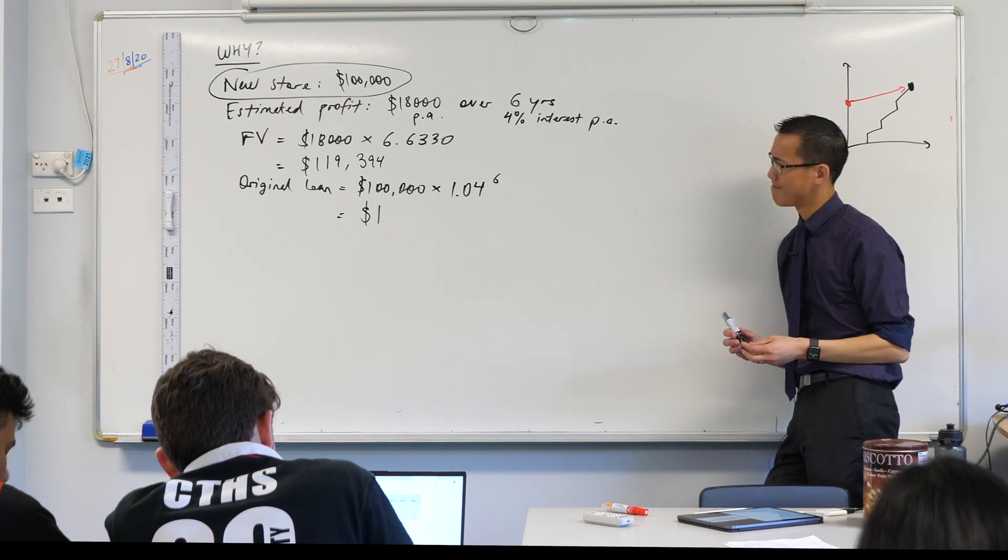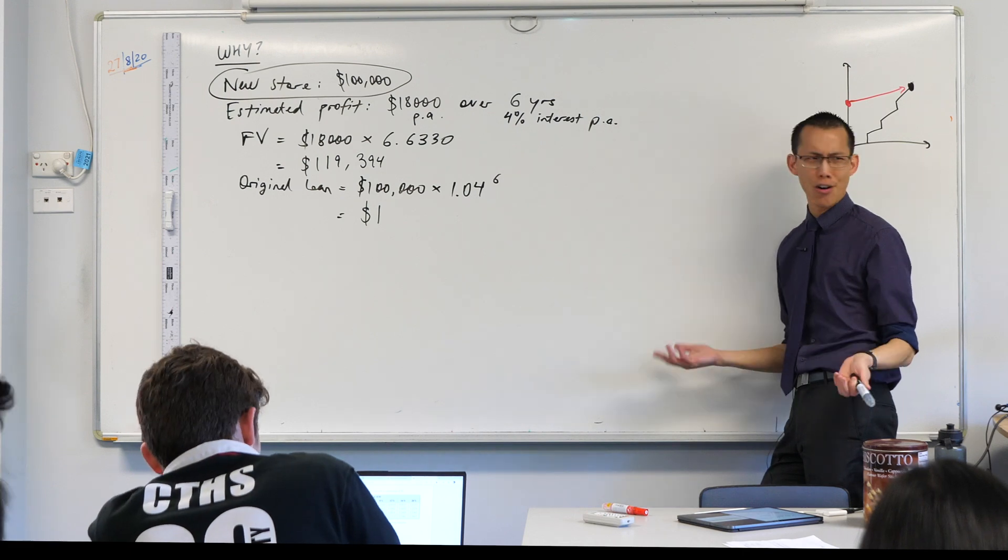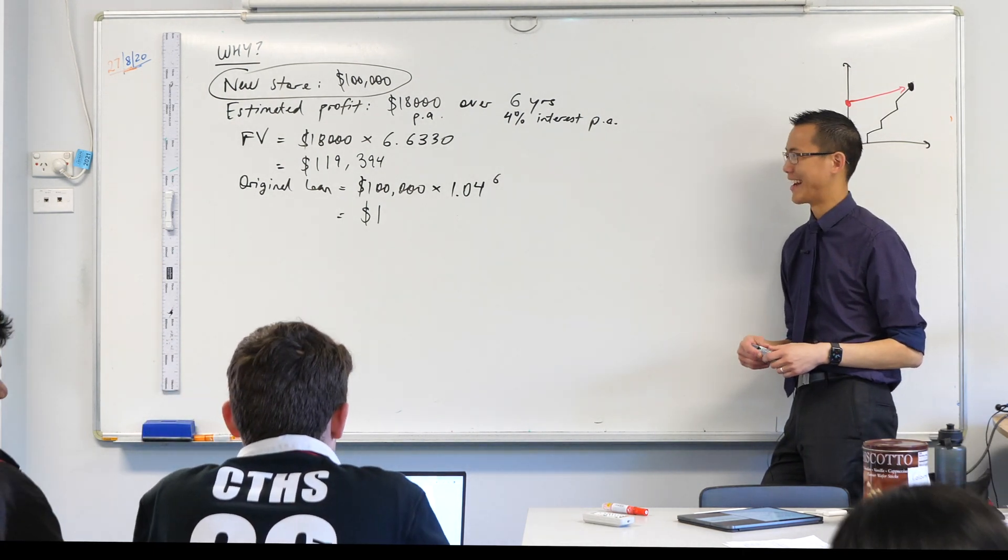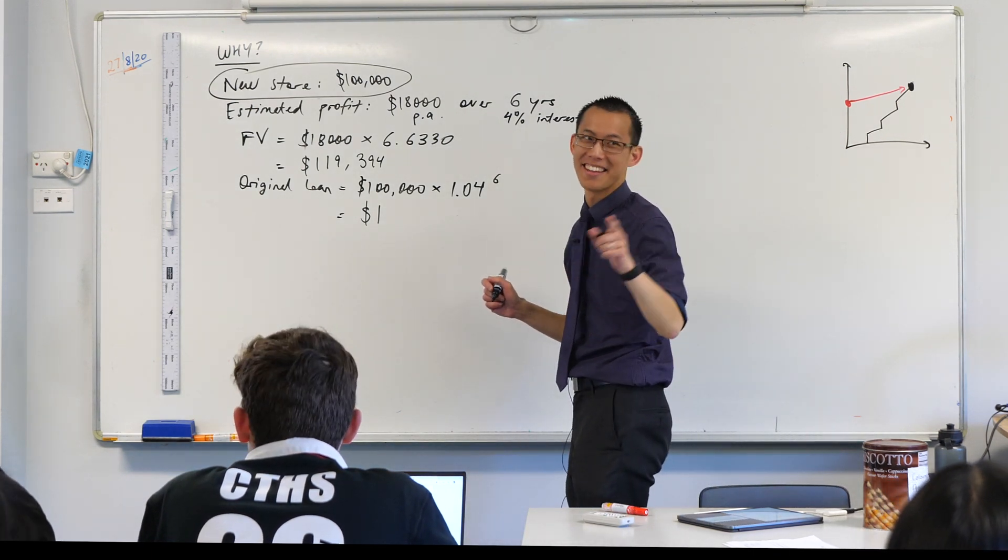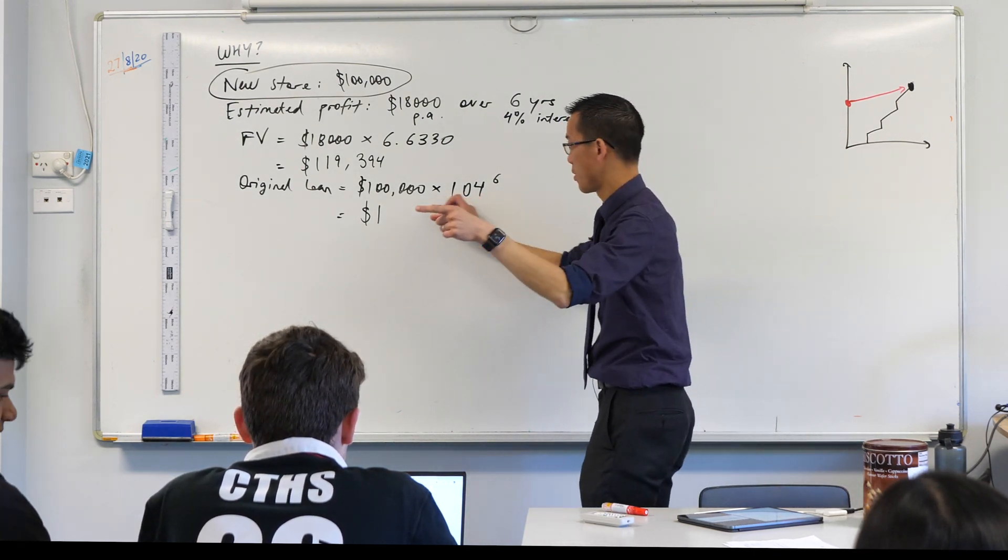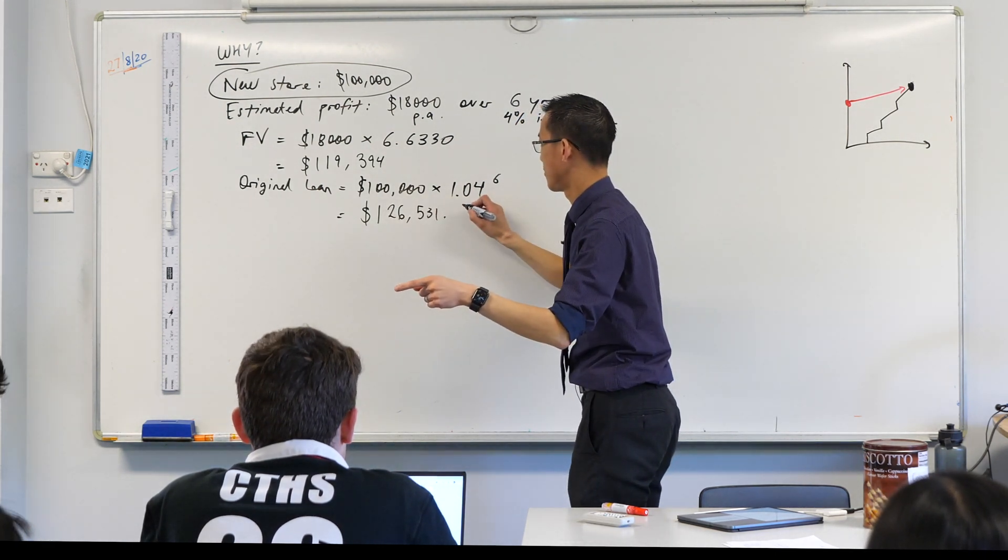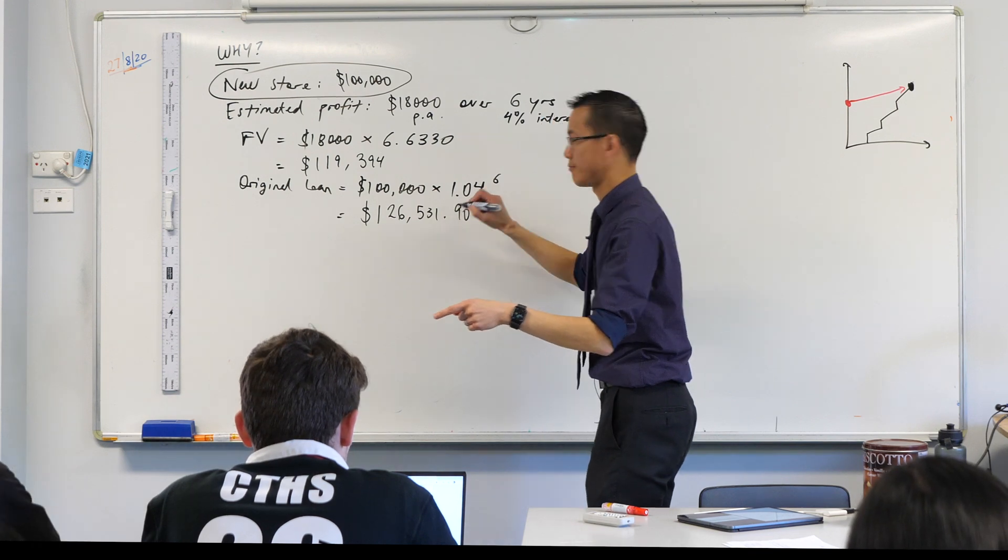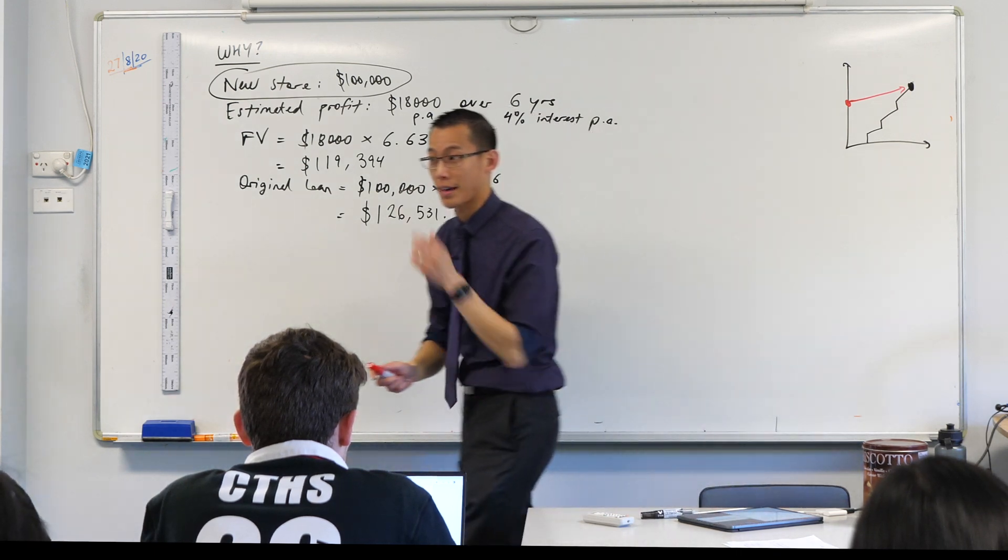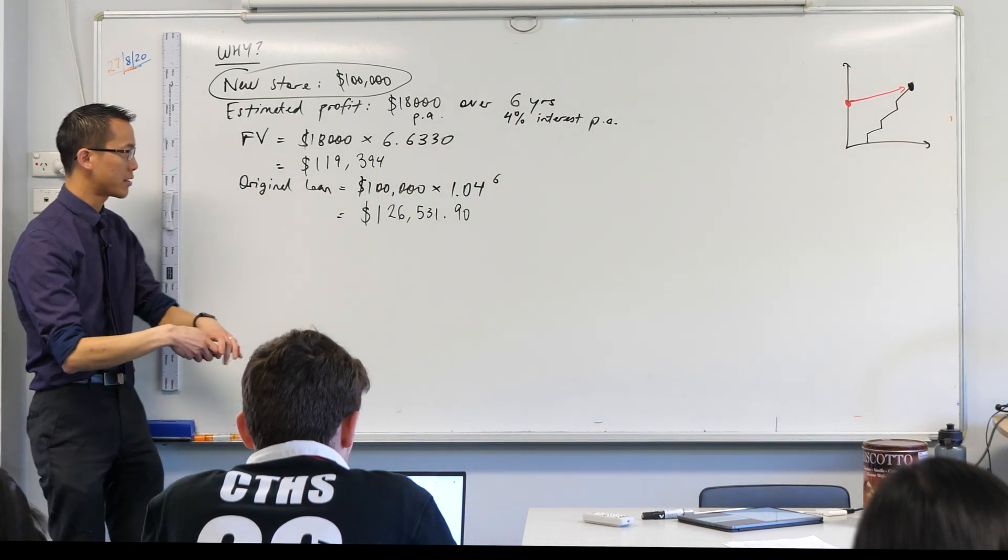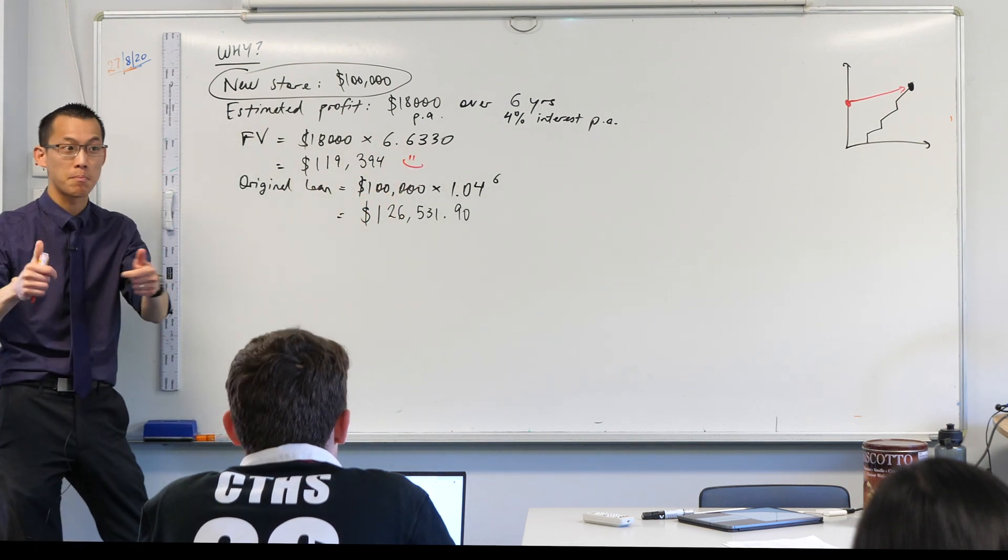Pretty sure it starts with a one, but I'm not very confident after that. Do you not all know your 1.04 times tables? I'm disappointed. Who's got him? One hundred and twenty-six thousand, five hundred and thirty-one dollars and nine cents. Cool, thank you very much. So here we have landed on a problem. Do you see what the problem is?